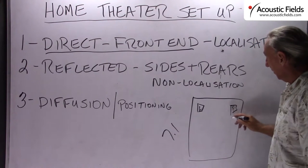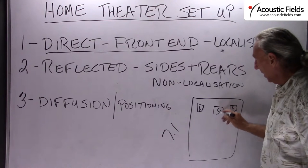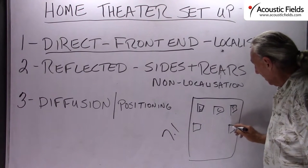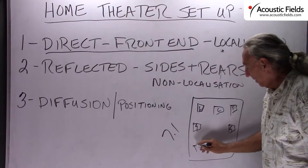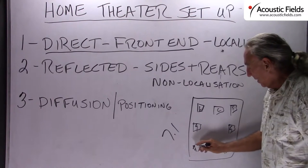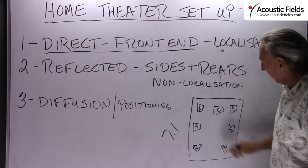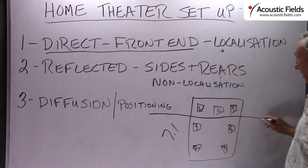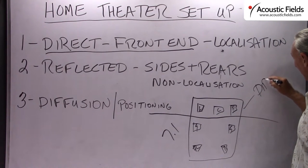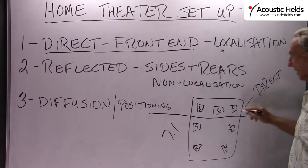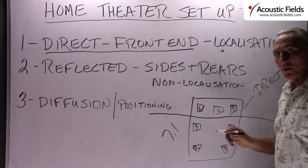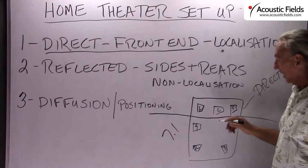So we have left and right, we have center, and then we have our sides and then we have our rears. Here's our cutoff point when we're talking about home theater. This is direct. We want a nice tight sound stage. We want the images on the screen to stay on the screen.